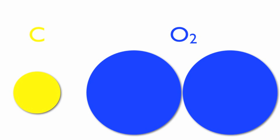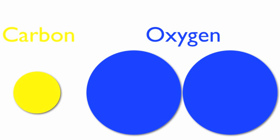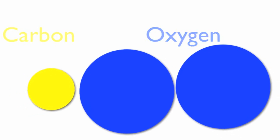Another raw material in the photosynthesis equation is CO₂. This molecule, made up of carbon and oxygen atoms, is known as carbon dioxide.